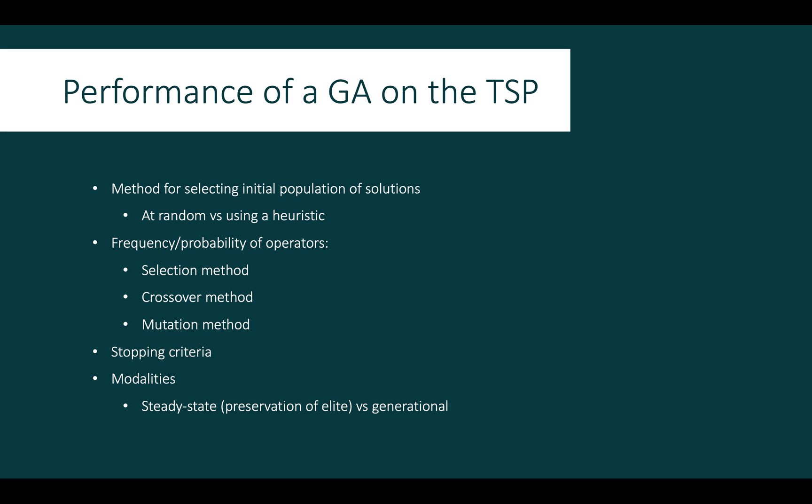How close the genetic algorithm gets to the optimal solution depends on several factors listed here. The bottom line is that for a few cities, using the genetic algorithm is a great choice. For many cities, if an approximate solution is acceptable, the genetic algorithm is, again, a suitable choice. But if your application of the problem requires the absolute optimal solution, a genetic algorithm might not be the most suitable choice.